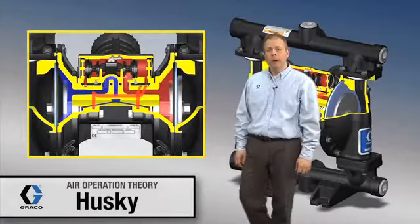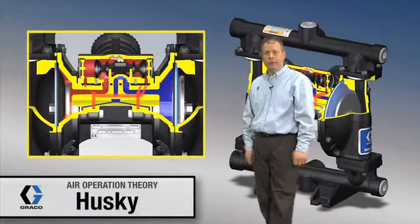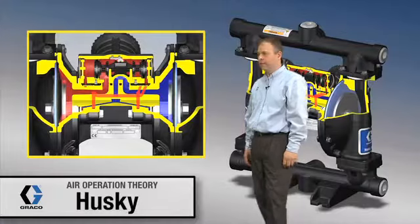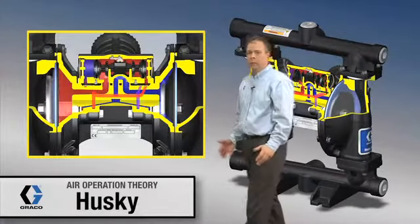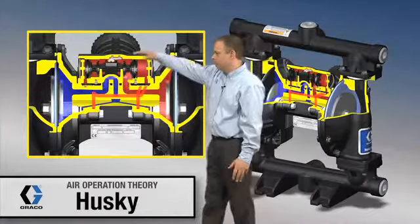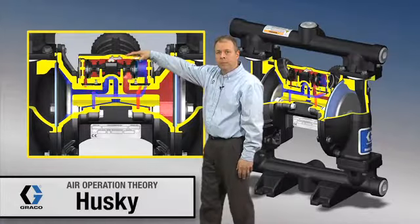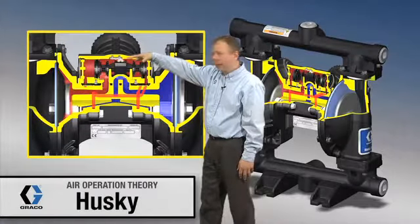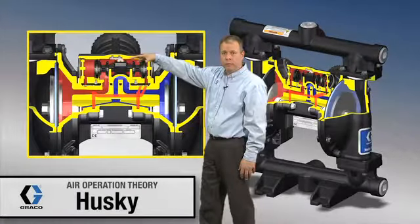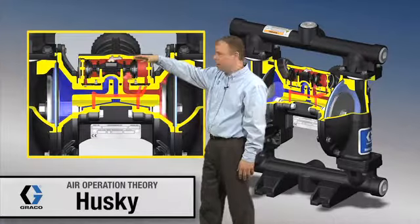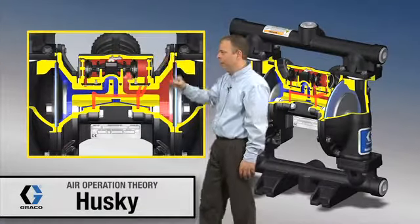Now we're going to talk a little bit more about the air valve and the air logic through the Husky 1050 pump. A couple of component identifications: air valve up on top, four bolts on that air valve. It's a modular design, so if you needed to replace it or repair it, four bolts and it pops right off.